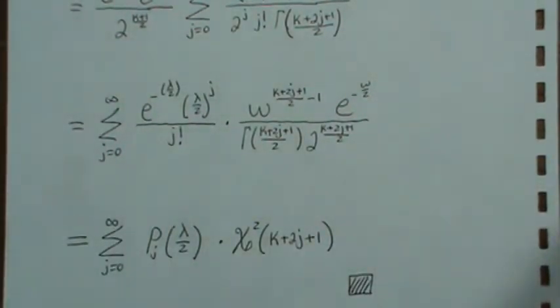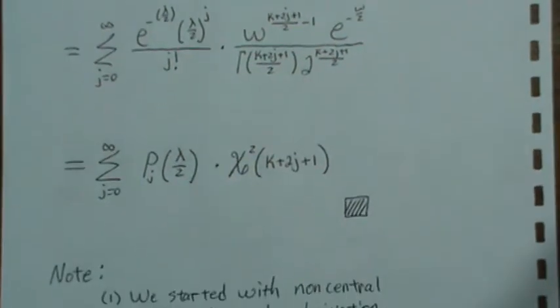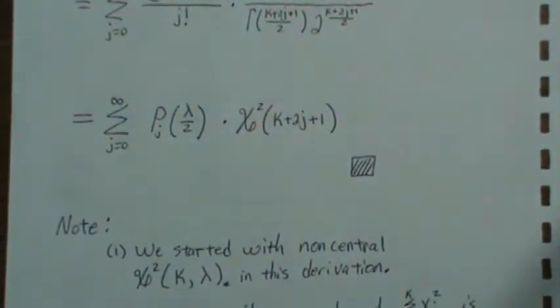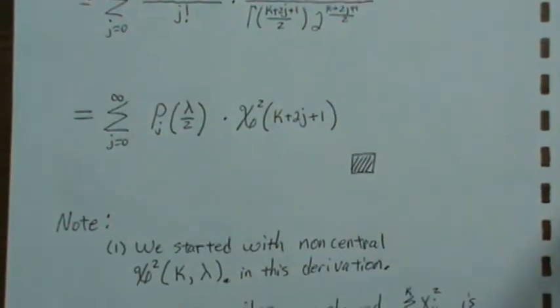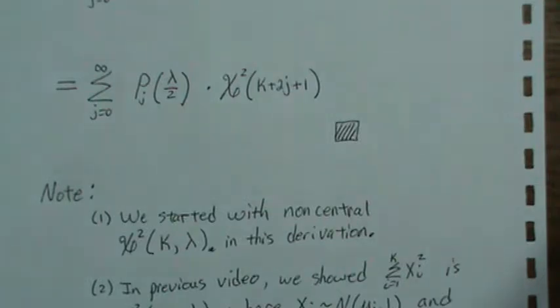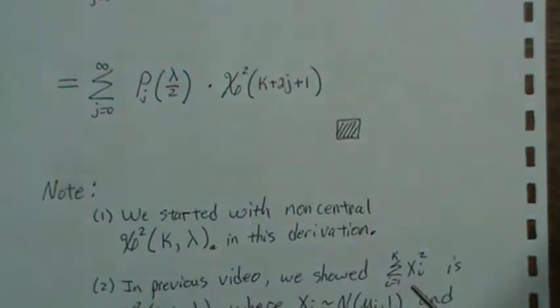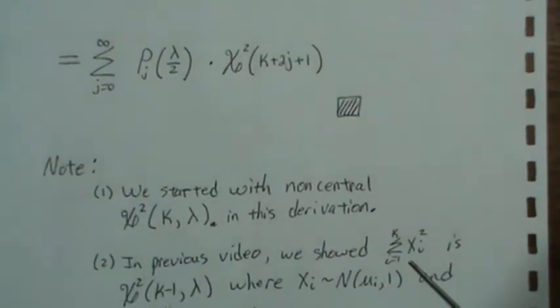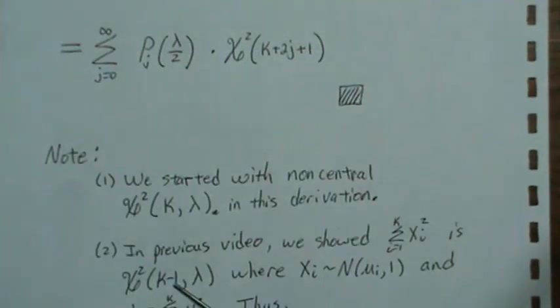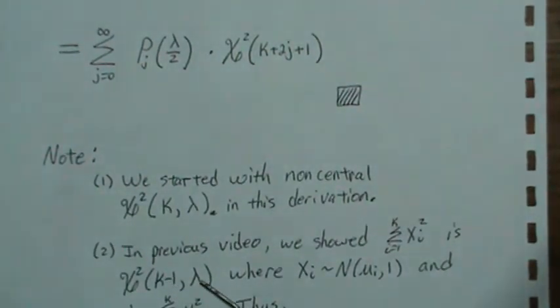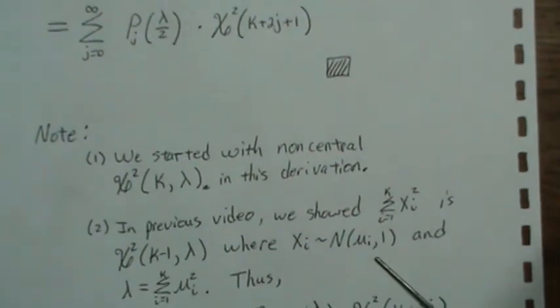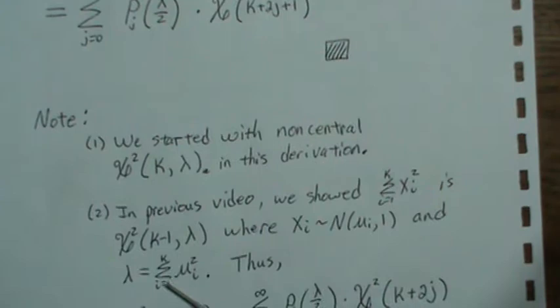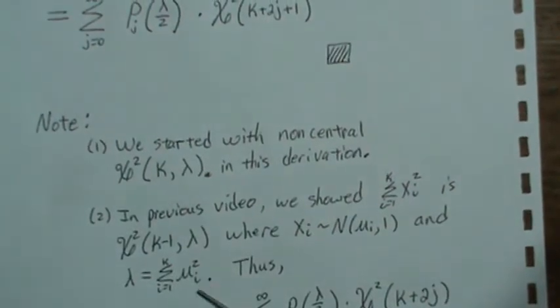And I want to point out that we started with a non-central chi-square with k degrees of freedom, non-central parameter lambda. But in the previous video, we wanted to show that this sum of xi-squares was a non-central chi-square distribution, k minus one degrees of freedom, non-central parameter lambda, where the xi's were normal mu i 1 and the lambda was the sum of the mu i squared.